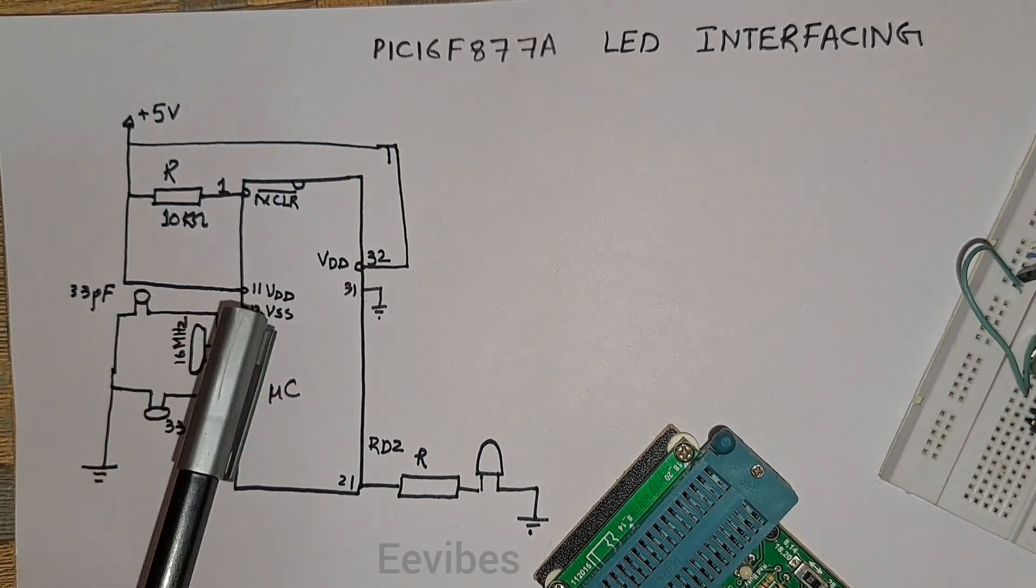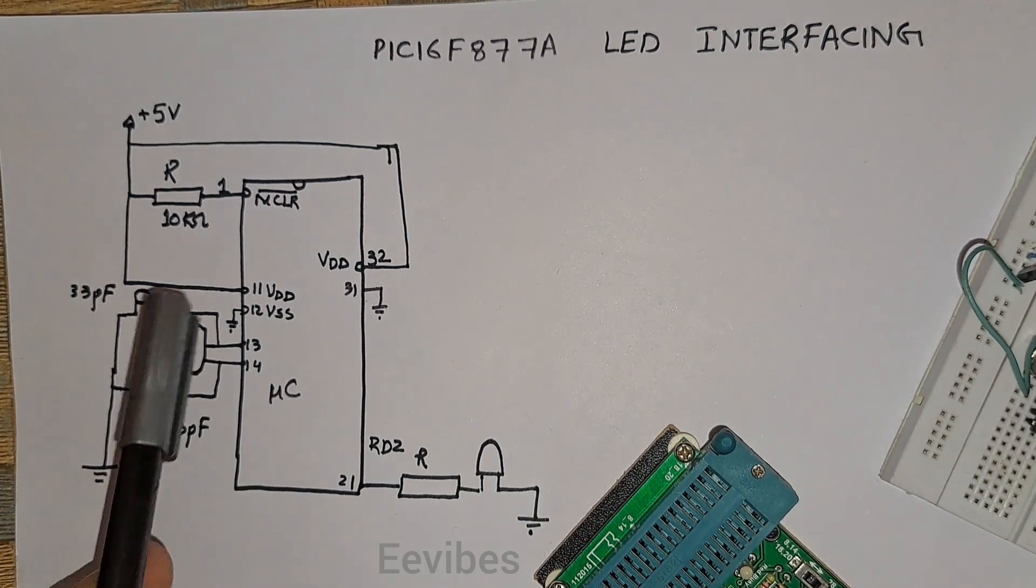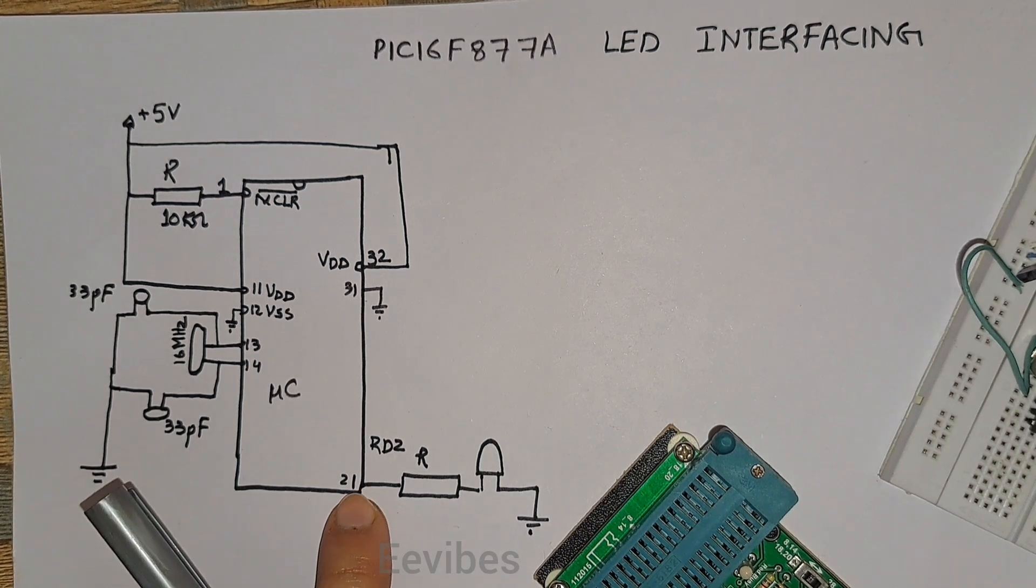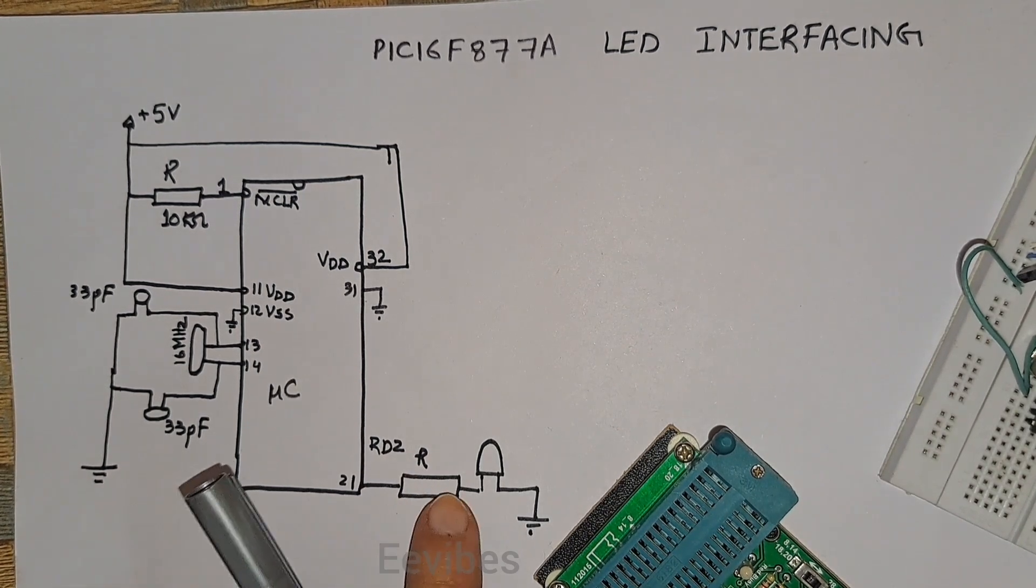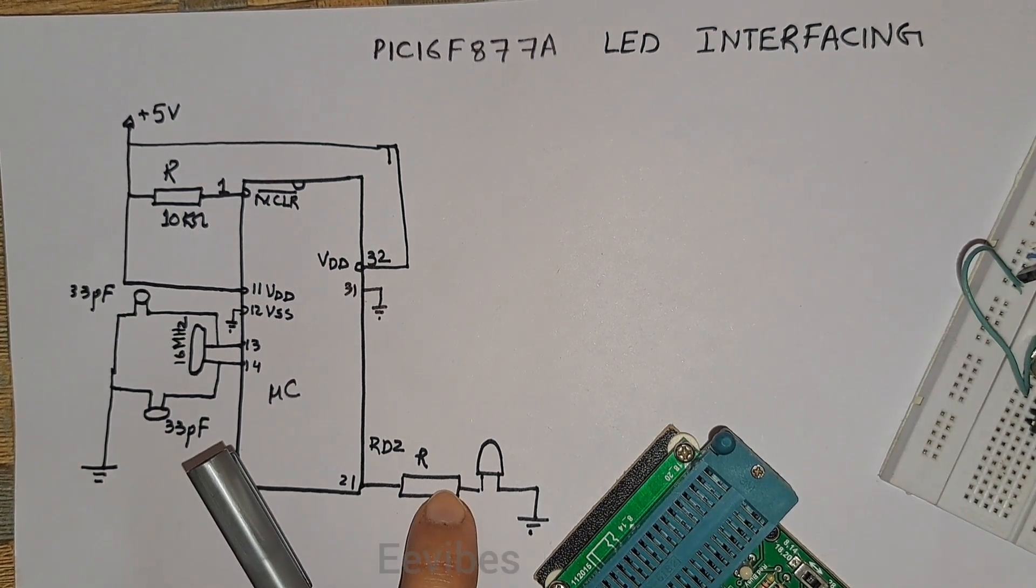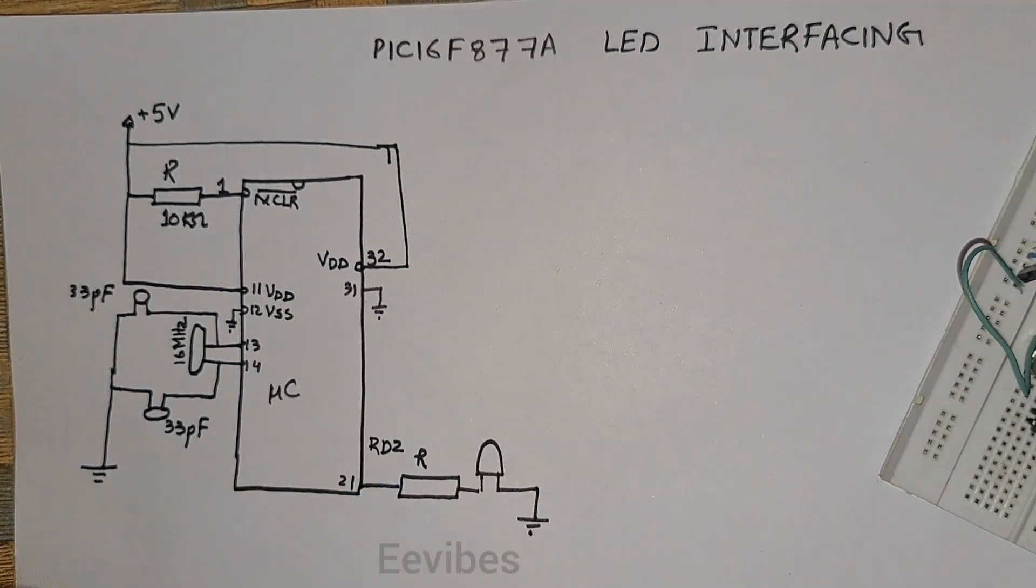Now the last pin that is left to be discussed is the RD2 pin, the second pin, where I have connected an LED with a resistor on the same circuitry I have actually connected on this breadboard right now.